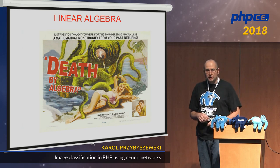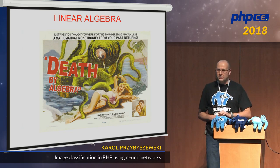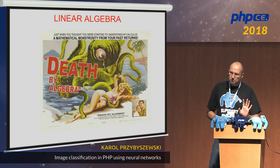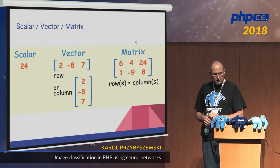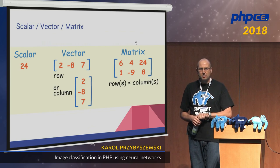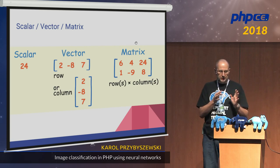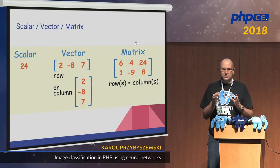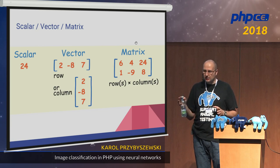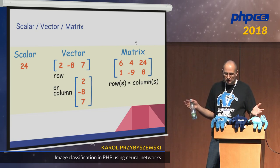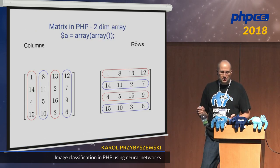It's time for the first monster: linear algebra. It's a very scary monster. We'll start very slowly. Linear algebra is a lot about matrices. Quick reminder: first we have scalars — just a simple number. Then the vector, which is a list of numbers. And then the matrix, which is a two-dimensional array. A matrix in PHP is basically a two-dimensional array. It's worth remembering that it has columns and rows — something trivial but very important.